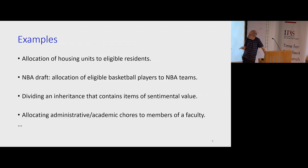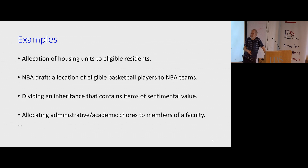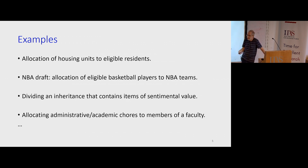Examples of settings more related to what we're doing: allocation of housing units to eligible residents — say, dormitories — where what you get doesn't depend on a bidding mechanism, but rather the university allocates the dorms. Or the NBA draft, drafting basketball players to teams, based on a certain order in which teams choose players. Or dividing an inheritance among heirs, or allocating academic chores to faculty members. Usually no transfer of money is involved.